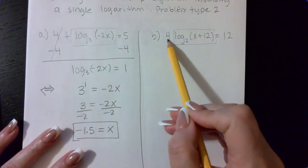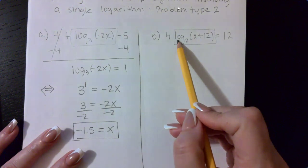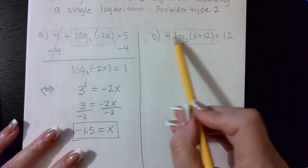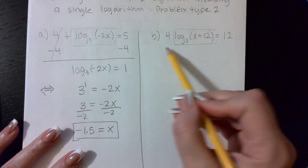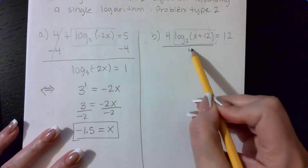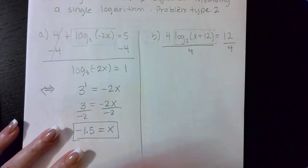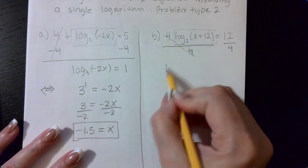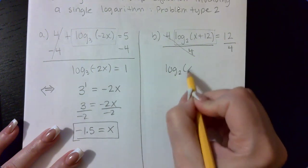Remember, coefficients are multiplied by the expressions that they're next to. So in order for me to eliminate a multiplication, I will have to do the opposite operation, which is to divide by 4. And what I do to one side, I must do to the other side.